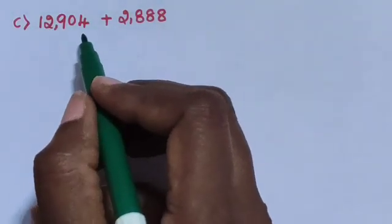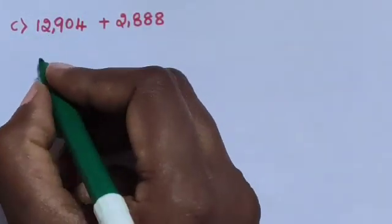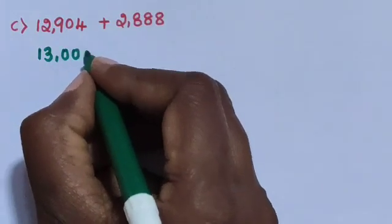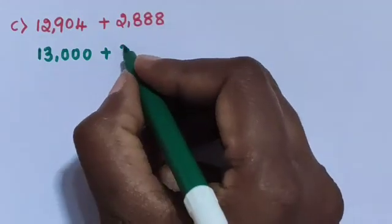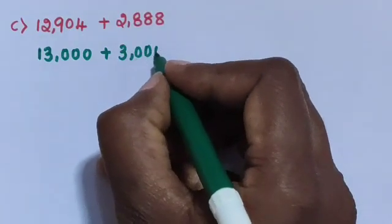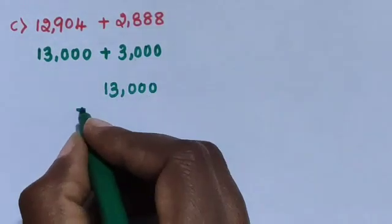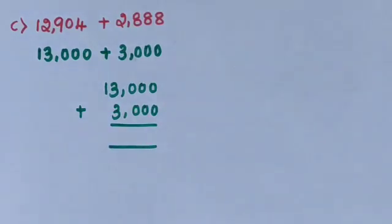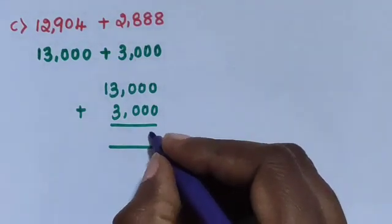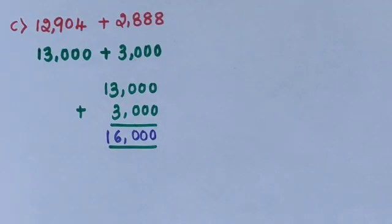Sub-question C: Estimate the numbers. 13,000 plus 3,000. The total answer is 16,000.